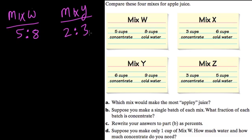5 and 2 meet together at 10, so that might be a little bit easier to think about. So I'm going to double mix W and I get 10 to 16. I'm going to make 5 batches of mix Y and I get 10 to 15.